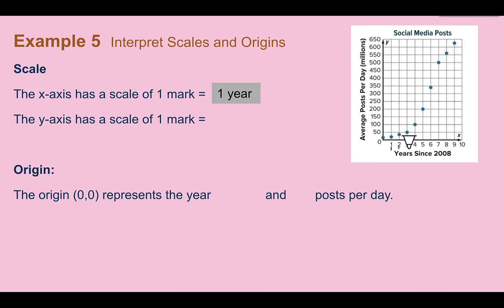But remember, this is in millions. It tells us the unit. So each one of those is 50 million posts. So the origin then is going to represent the year 2008 and 0 posts per day.